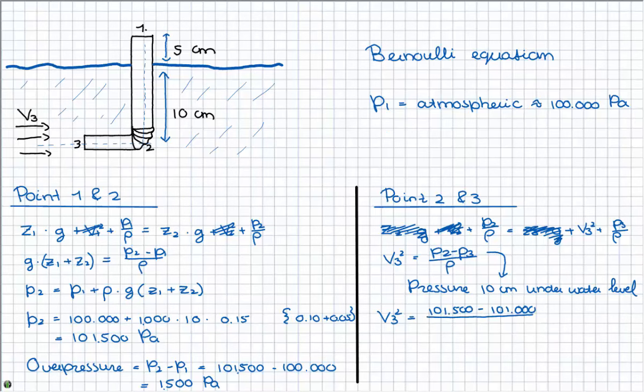Now if we calculate this, v3 squared is 0.5, and then v3 is the root of 0.5, and this is 0.71 meters per second.